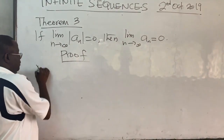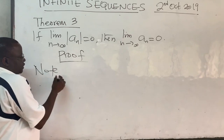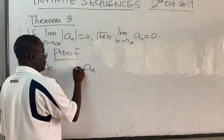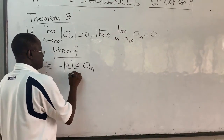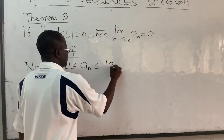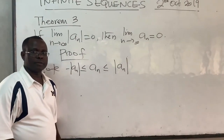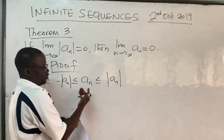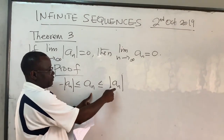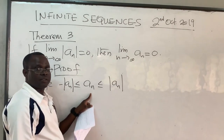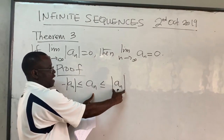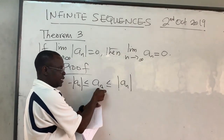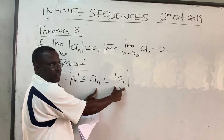To prove this, it is important to note that the sequence aₙ always lies between negative |aₙ| and positive |aₙ|. Consider just this part: if the terms of this sequence are negative, then the negative absolute value will also be negative, so the inequality holds. The negative stuff will always be less than the positive stuff.